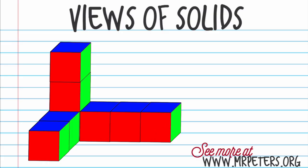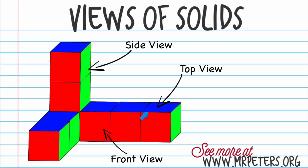And when we're dealing with views of solids, we're going to talk about three views. The views we're going to talk about are side view, top view, and front view. The side view would be the green, the top view would be the blue, and the red would be the front view.